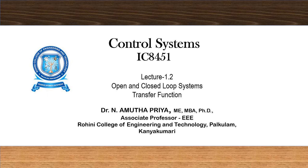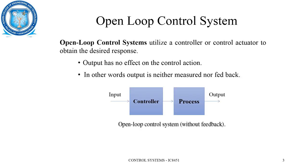Welcome. This is a control systems course, lecture 1.2, focusing on open and closed loop systems. We will also discuss the transfer function. Open loop control systems utilize a controller in addition to the process — the controller may be a control actuator — and this system is designed to obtain the desired response.